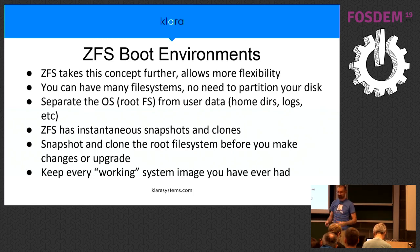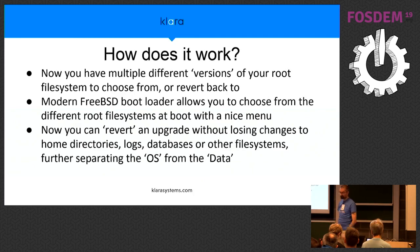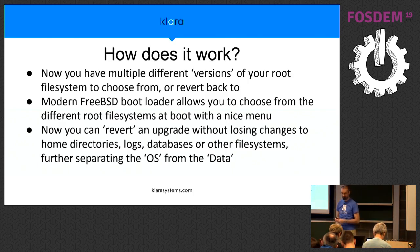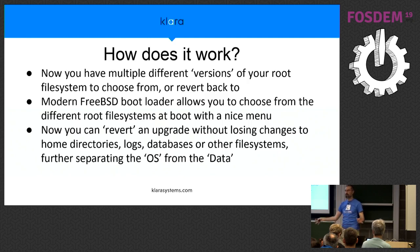It's easy to go backwards. You keep as many working images as you want, so no matter how long ago you introduced the bug, you can always go back to before it. We basically have multiple versions of the root file system and you can use the menu in the bootloader to select which one you want to start from. You can always choose to revert and go back, and you don't lose changes to the rest of the system — only the operating system.